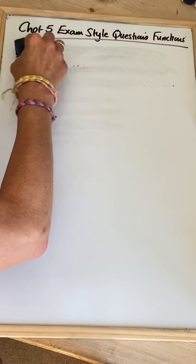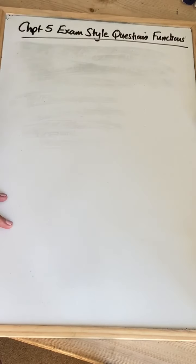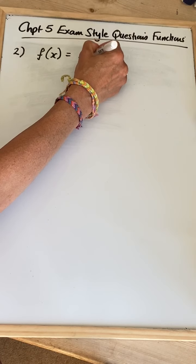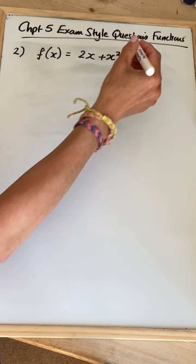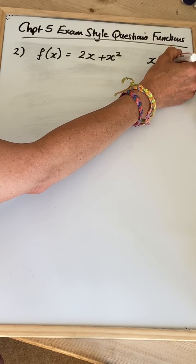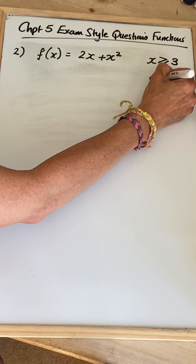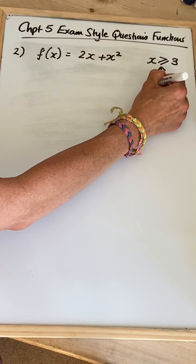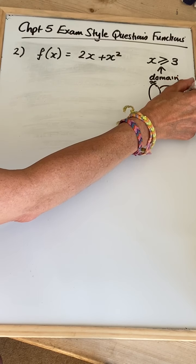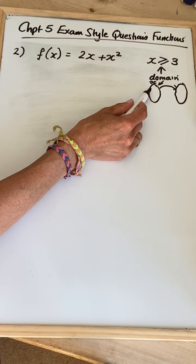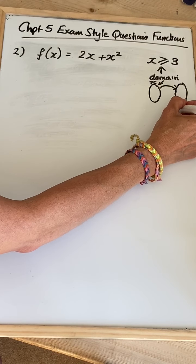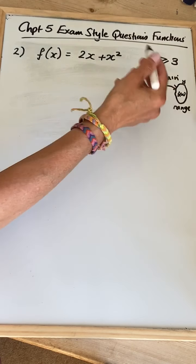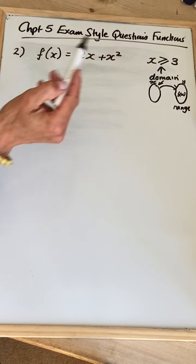Question two. Here we've got a function written in terms of x — f of x equalling 2x plus x squared, so it's another quadratic. And this is important: x is greater than or equal to 3. This is the domain of our function. If you think about a function being a mapping from one set of numbers to another, the domain is the values of x that you're allowed to use, and the range is the answers, or the y values, or the f of x values that come out of your function.